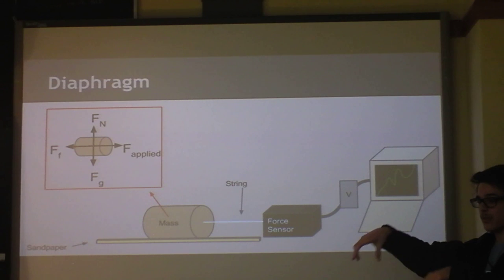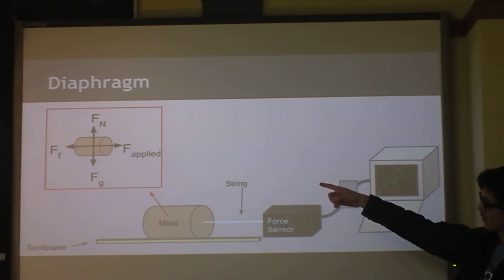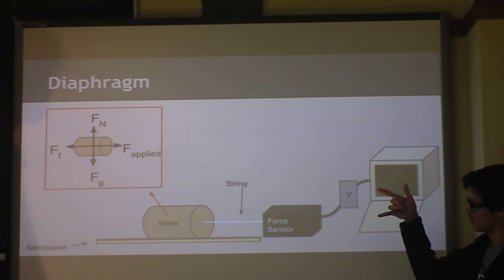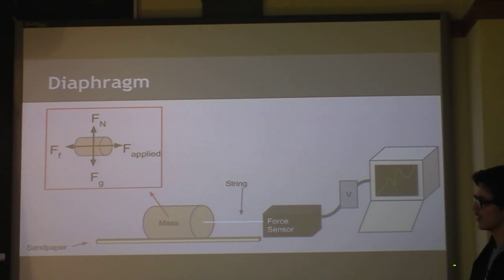It wasn't itself being affected by the sandpaper. This diagram just shows all the forces—the force of gravity and normal force cancel out obviously. And then in theory, when you reach the point at which static friction becomes kinetic friction, the applied force and the force of friction should be equal.